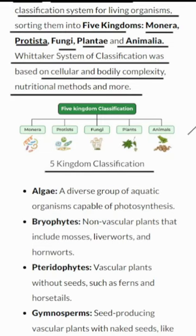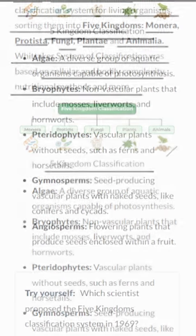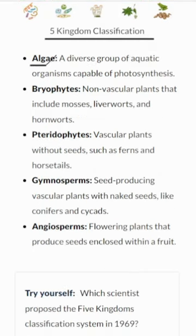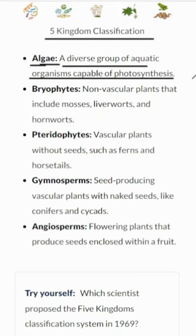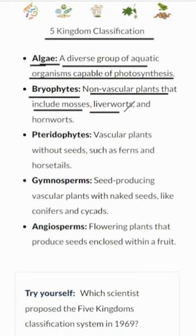Let's get to know some of the plant groups. Algae are fascinating aquatic organisms that can perform photosynthesis. They come in various shapes, sizes, and colors, adding beauty to our oceans. Bryophytes are non-vascular plants, including mosses, liverworts, and hornworts. They may lack the complex transport systems of higher plants, but they have their unique charm.